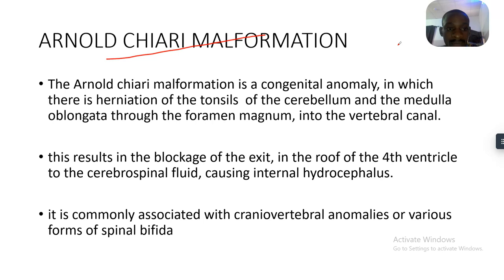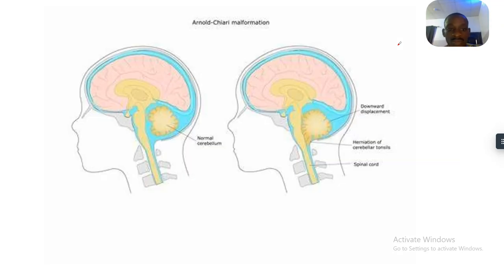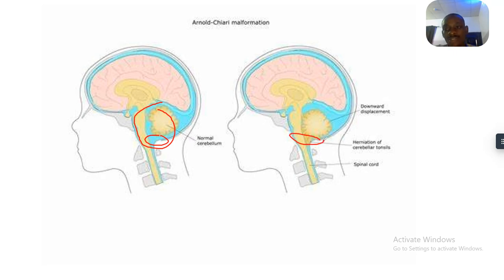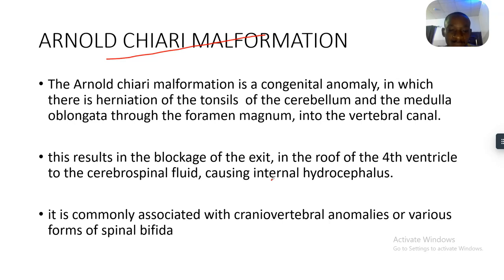Arnold Chiari malformation is a congenital anomaly in which there is herniation of the tonsils of the cerebellum and the medulla oblongata through the foramen magnum into the vertebral canal. Comparing a normal cerebellum image to Arnold Chiari malformation, you can see there is a herniation — a downward movement of the cerebellum. Specifically, it is the tonsils of the cerebellum — the folds visible around the cerebellum — that herniate.